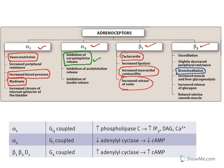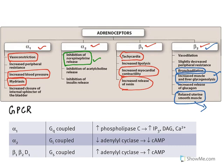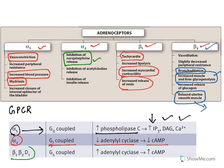Beta-2 receptors are mostly present on the bronchial tree and cause bronchodilation — this is why beta-2 agonists are used to treat asthma and COPD. Beta-2 receptors are also on the liver (causing glycogenolysis and increased glucose) and in the uterus (causing uterine smooth muscle relaxation). Regarding signal transduction: alpha-1 is Gq-coupled, increasing phospholipase C, IP3, DAG, and calcium. Alpha-2 is Gi-coupled, reducing adenylyl cyclase and cAMP. Beta-1, beta-2, and D1 are all Gs-coupled, increasing adenylyl cyclase and cAMP.